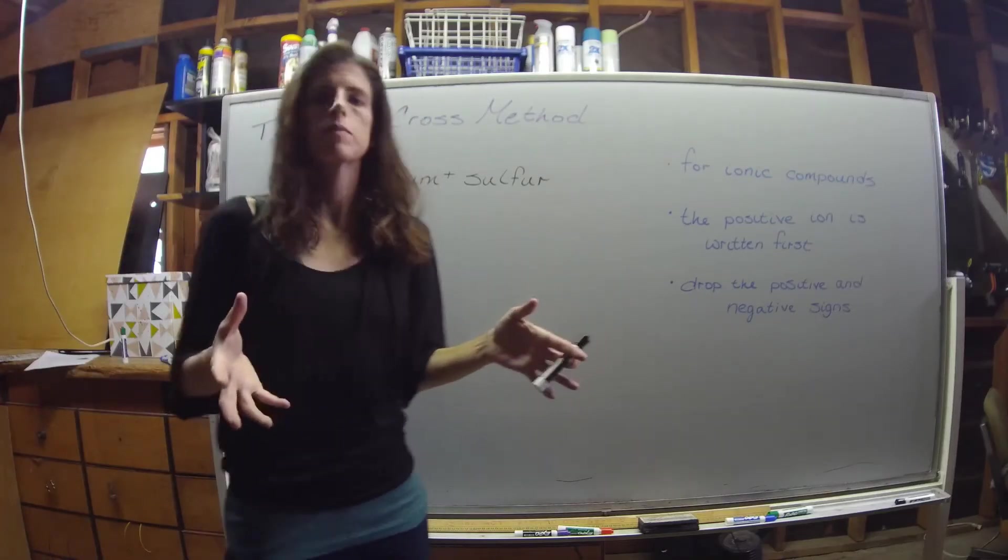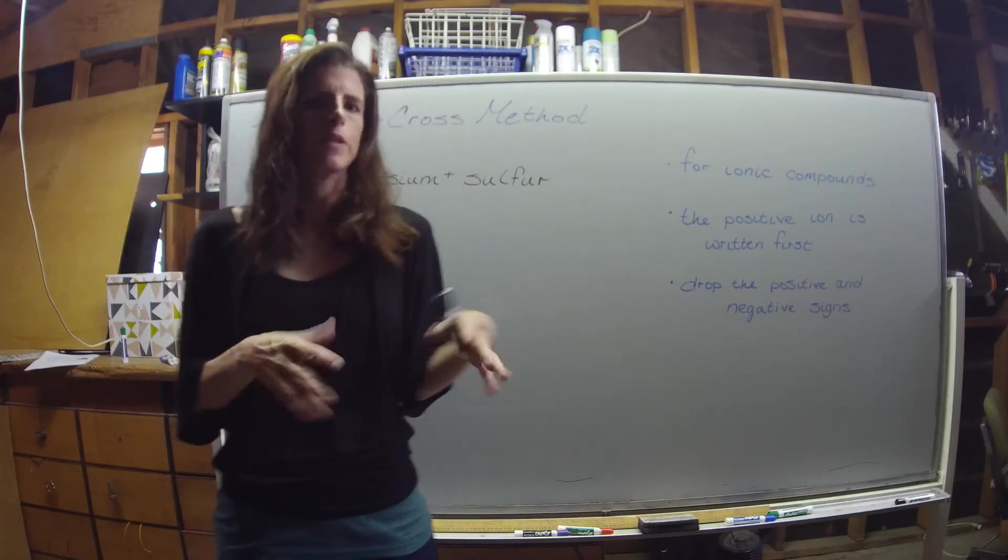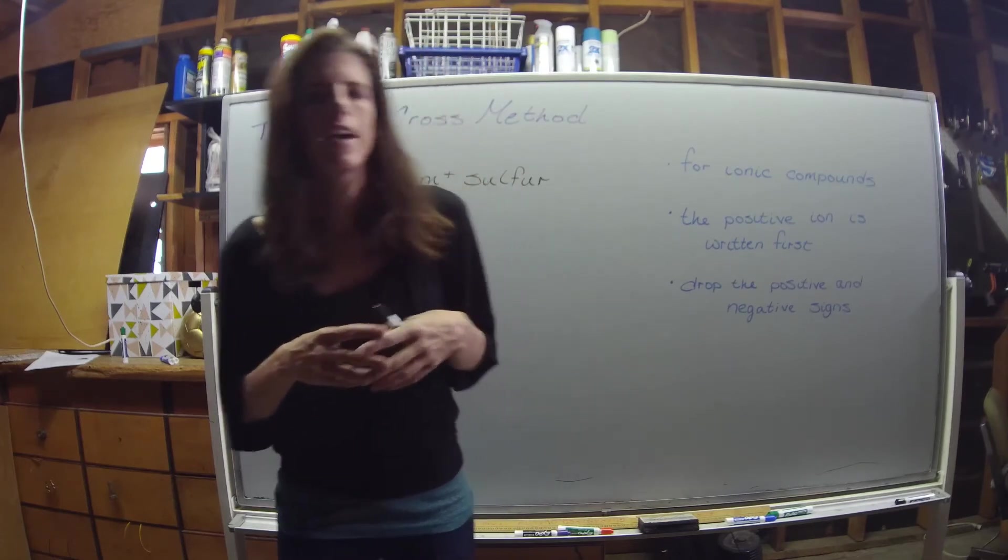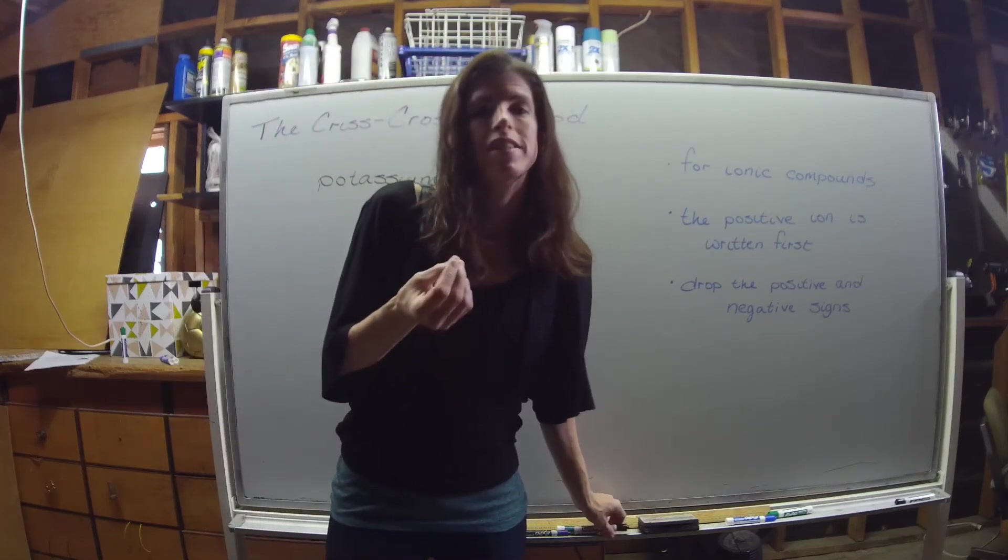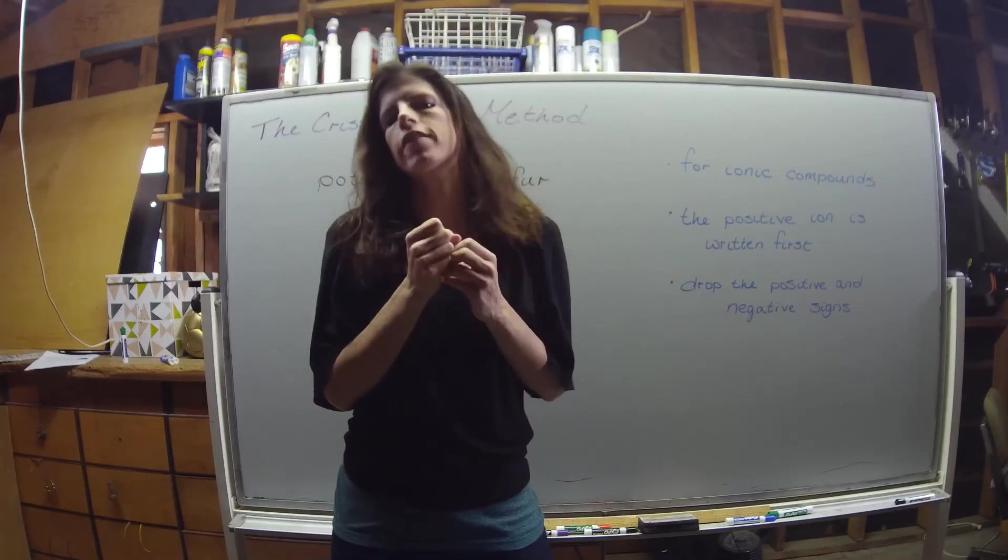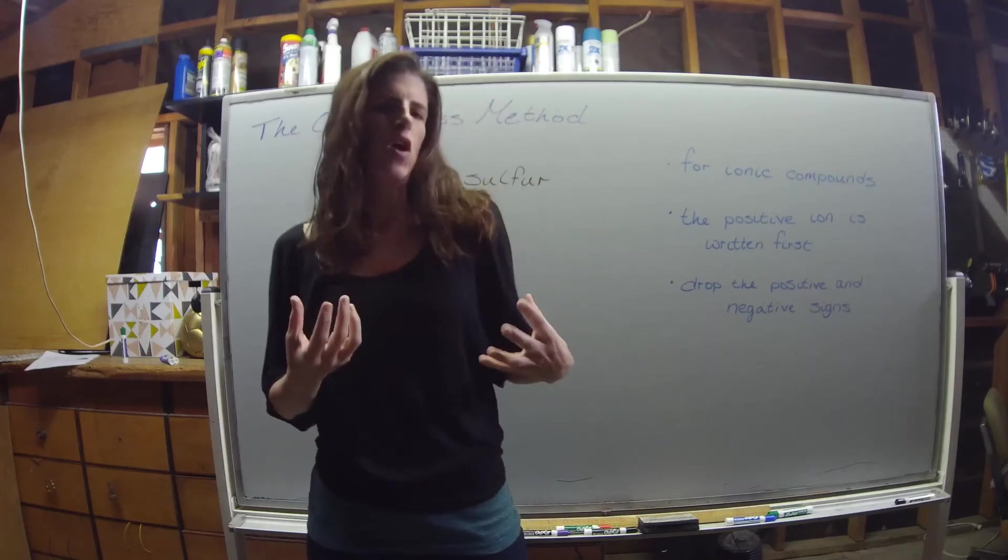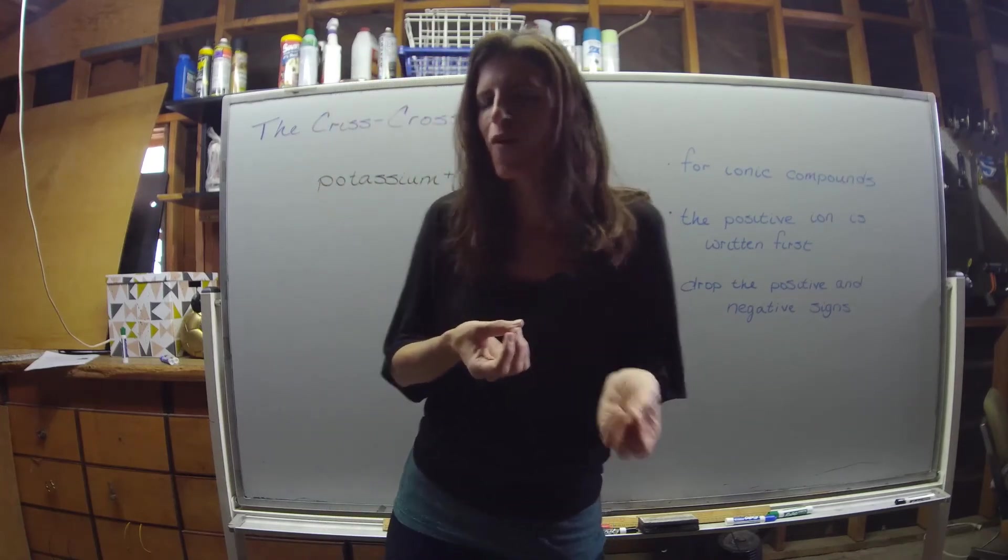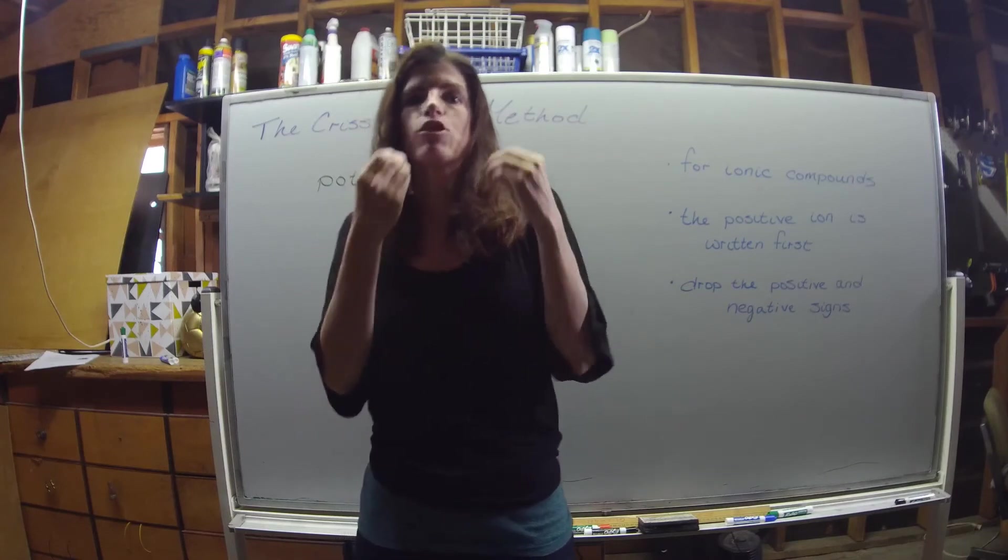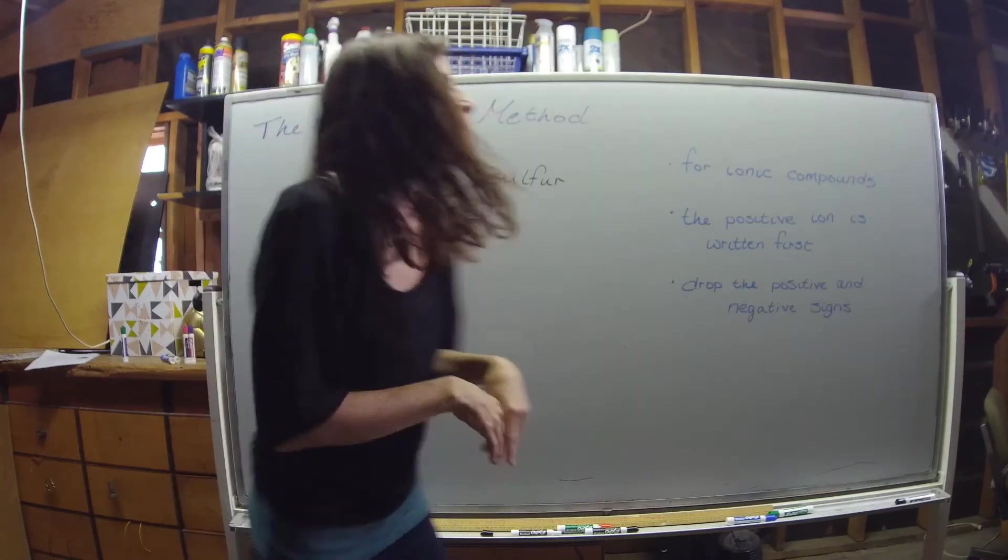Let's talk about the crisscross method for coming up with the formulas of our ionic compounds. Crisscross was this teeny bopper borderline hip-hop duo in like the early 1990s. I kind of remember them from like middle school. They had this infamous dance move because their name was Crisscross where they'd go like this all the time in their videos or when they pose - they'd be crisscrossing their arms.